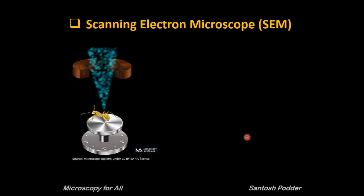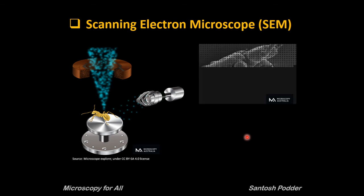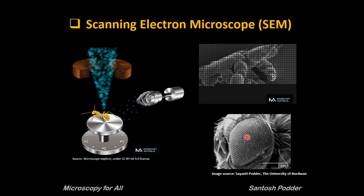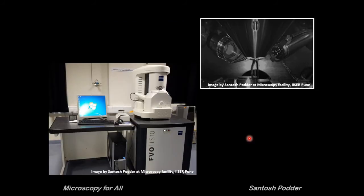In scanning electron microscopes, a beam of electrons scans the surface and the bounced-off electrons are collected by a detector. The resulting images show the surface topography of your sample — for example, this is a Drosophila compound eye where you can clearly see the ommatidia. This is the scanning electron microscope and its sample chamber — your sample sits on top, electrons come in, bounce off, and are collected by the detectors.